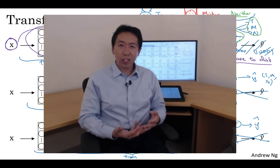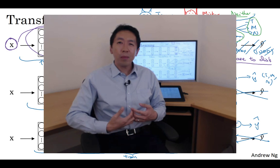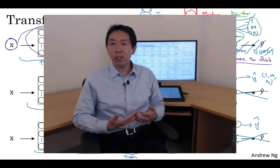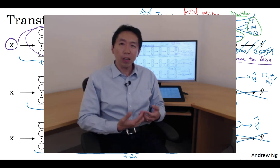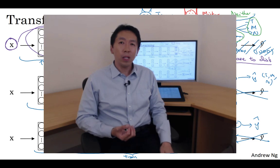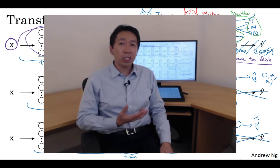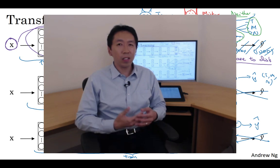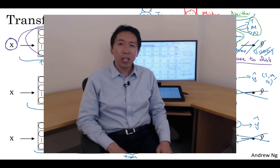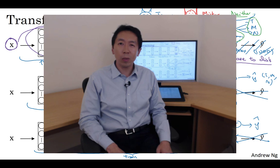So that's transfer learning for the training of ConvNets. In practice, because the open datasets on the internet are so big and the weights you can download that someone else has spent weeks training has learned from so much data, you find that for a lot of computer vision applications, you just do much better if you download someone else's open source weights and use that as initialization for your problem.